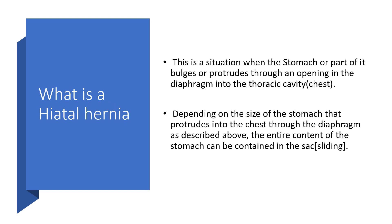What then is hiatal hernia? This is the situation when the stomach, or part of it, bulges or protrudes through an opening in the diaphragm — the hiatus — into the thoracic cavity, otherwise known as the chest cavity. It depends on the size of the stomach or the part that protrudes, and the entire contents of the stomach can be contained in the sac that has protruded into the chest cavity.